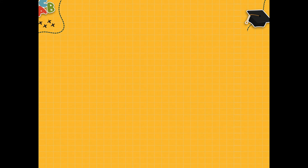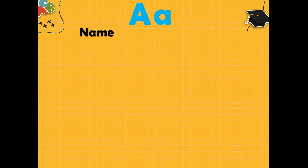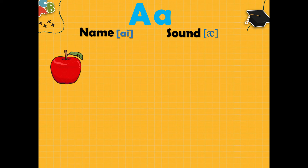We start with letter A. Big A and small a. The name of this letter is A, and this letter gives sound A. Let's see examples. What is it? This is apple. A, apple.